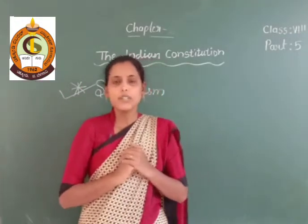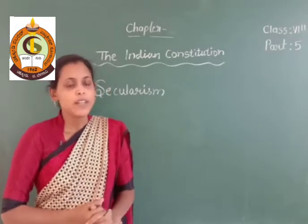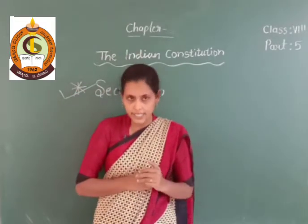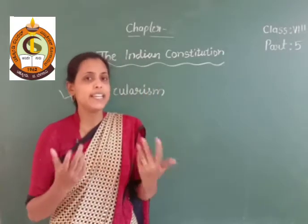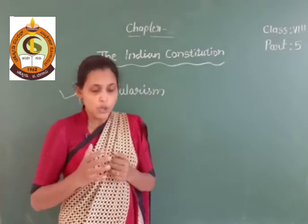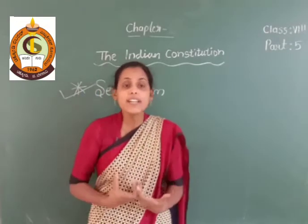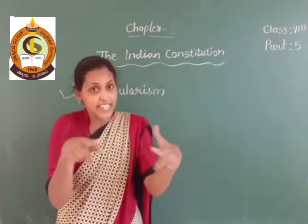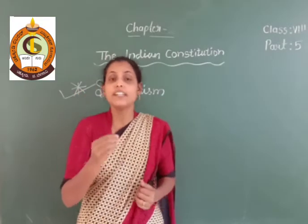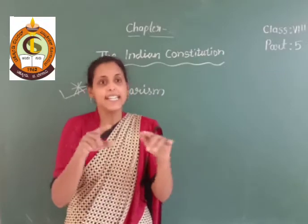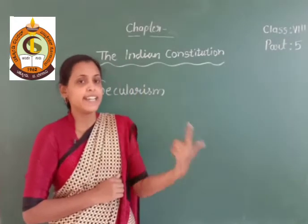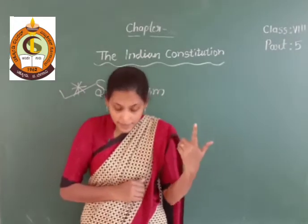One important point I would like to highlight: when I was talking about federalism, I said that we are living in a diverse country. Our country is called unity in diversity. Our government has structured itself as per the convenience and culture of its citizens. In the central list there are 100 subjects, and in the state list there are 61 subjects.